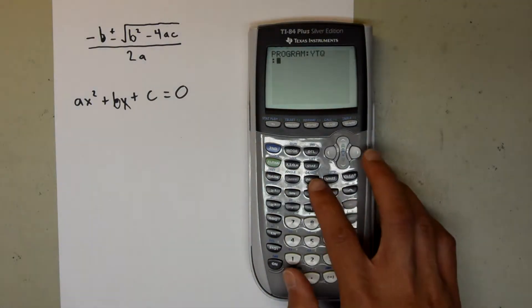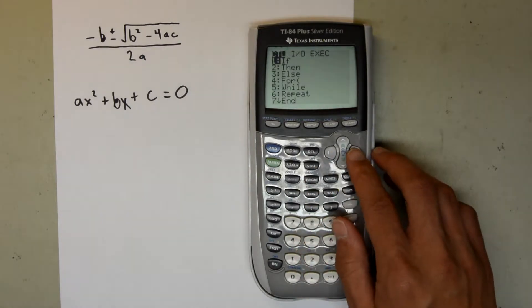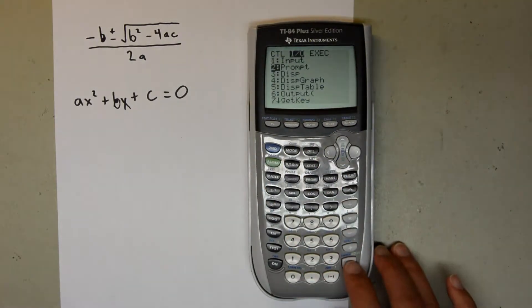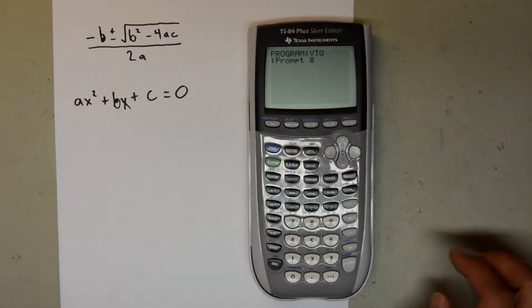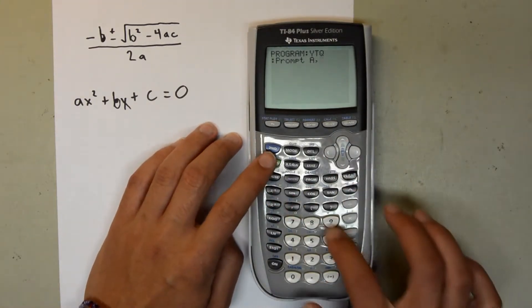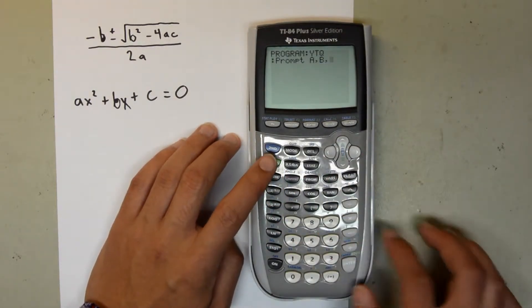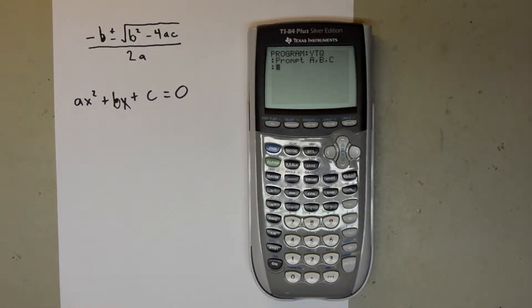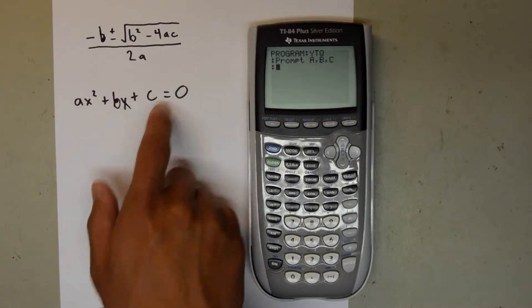Now click on the program button again, and scroll over to input output, or I-O, and choose prompt, option 2. Then use the alpha key to type A, B, C, so A, B, C, and hit enter. This tells the calculator that you will be manually giving it these three values, so the A, B, and C here.